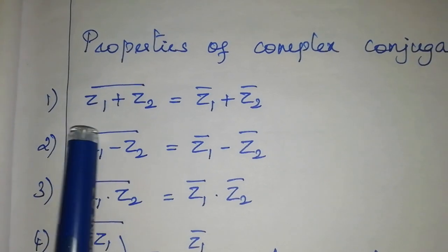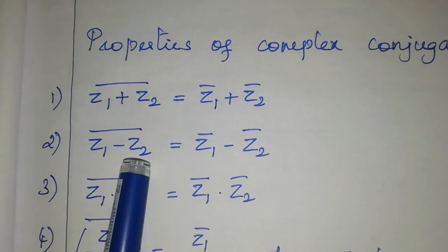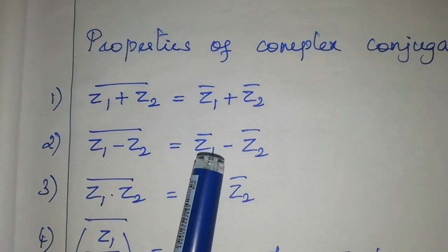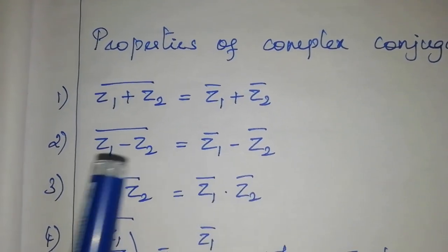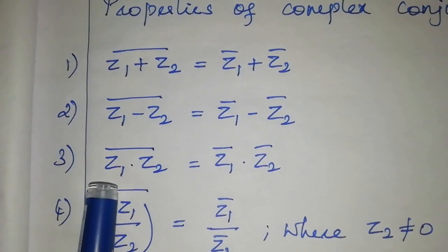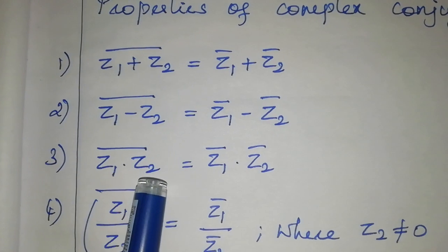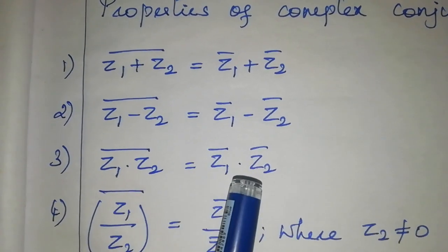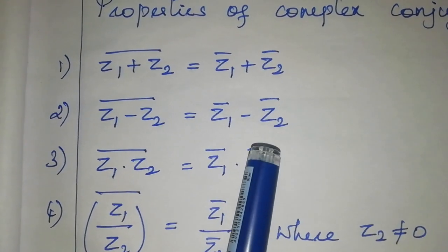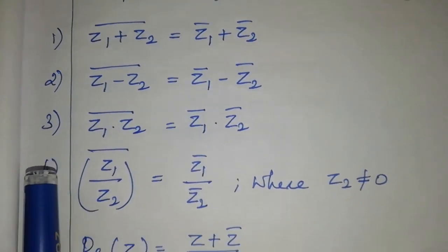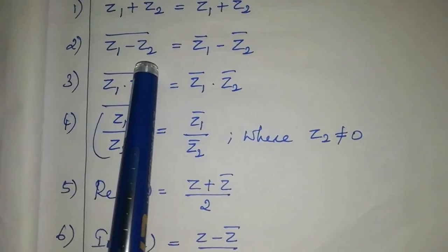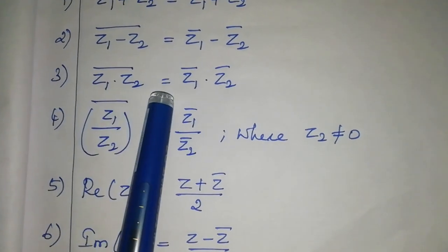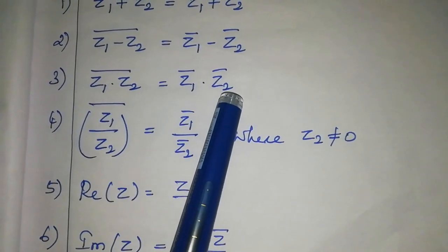That is, the conjugate of the difference of two complex numbers is equal to the difference of their conjugates. The third property is: (z1 × z2) bar equals z1 bar times z2 bar. That is, the conjugate of the product of two complex numbers is equal to the product of their conjugates.